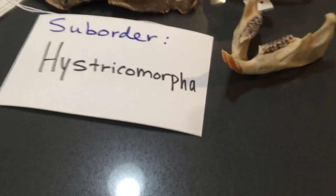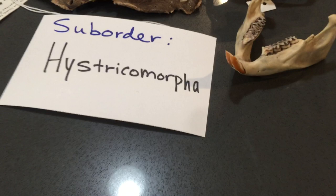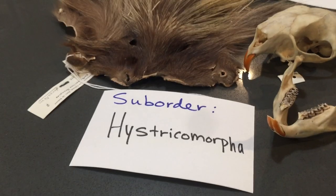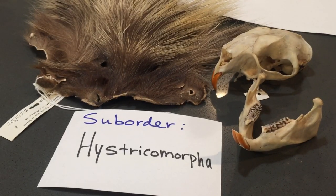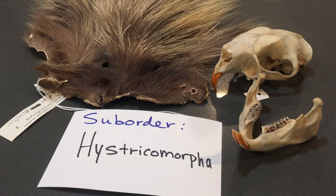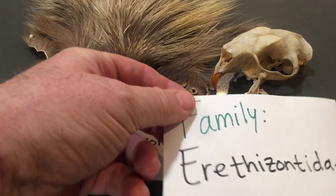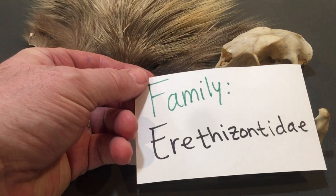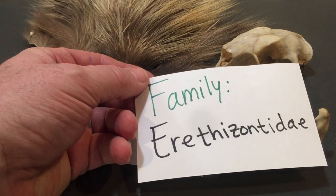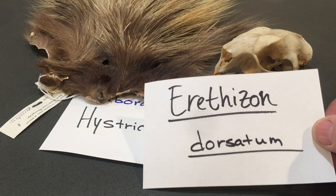Now let's deal with the suborder Hystricomorpha. The only species in North America is the North American porcupine. The North American porcupine is in the family Erethizontidae — a family you need to know from your handout — and the species you also need to know is Erethizon dorsatum.